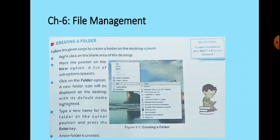First of all, you have to right-click on the blank area of the desktop. Place the pointer on the New option. A list of sub-options will appear, like you can see in figure 6.1. Then click on the Folder option. A new folder icon will be displayed on the desktop with its default name highlighted. The default name is 'New Folder.' Type a new name for the folder at the cursor position and press the Enter key. Erase the 'New Folder' name, type your own name, and press Enter. A new folder will be created and you can see it on the desktop.